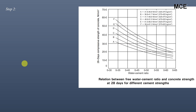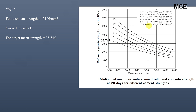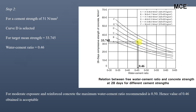Next, we find the water-cement ratio using the IS code chart of 28-day compressive strength versus water-cement ratio. For our cement strength of 51 N/mm², curve D (covering 46.6 to 51.5 N/mm²) is selected. Drawing a horizontal line at the target mean strength of 33.745 N/mm² to intersect curve D and dropping a vertical line gives a water-cement ratio of 0.46. For moderate exposure and reinforced concrete, the maximum permitted by IS code is 0.5, so 0.46 is acceptable.